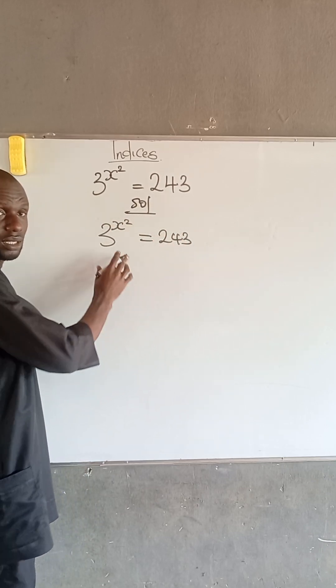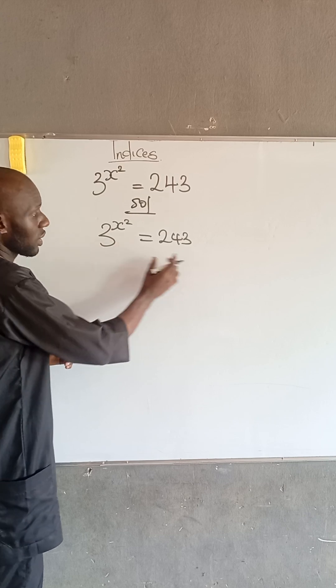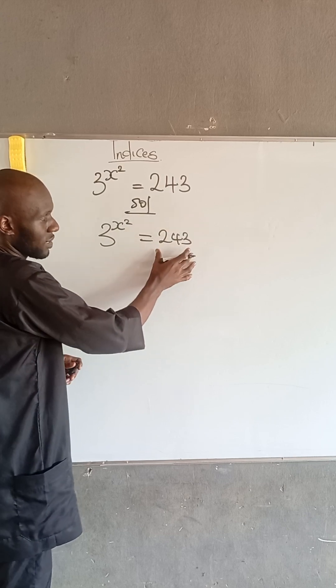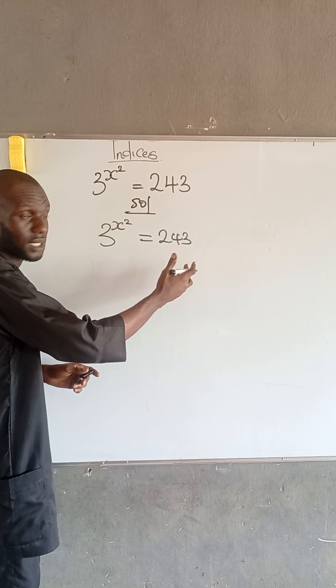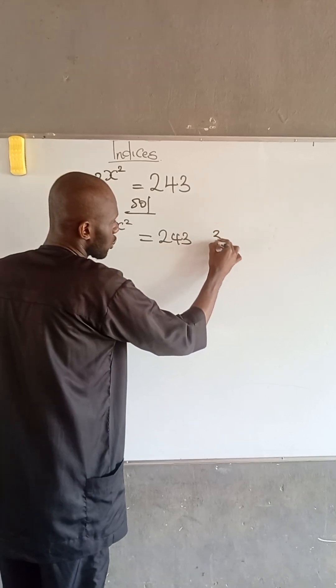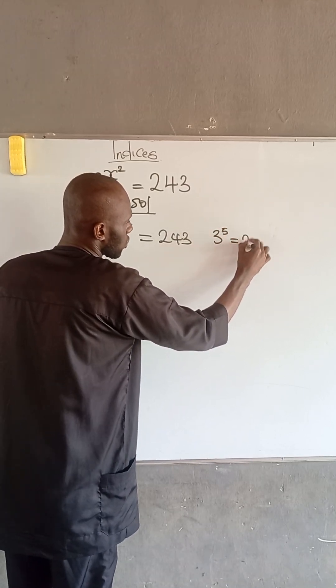Now, if you look at the left-hand side, we have a base of 3. Can we express the value at the right-hand side to have the base of 3? Yes, we have that 3 to the power of 5 is equal to 243.